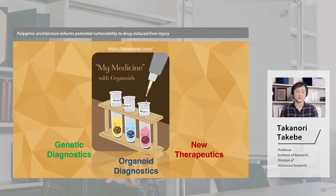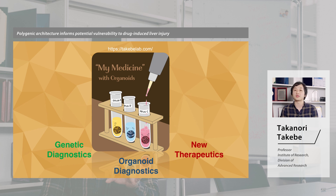Taken together, we are proposing an organoid-based precision medicine application in the near-term future. There are three main applications. First, the genetic risk score can directly predict a patient's condition after drug exposure. Second, we can use patient-specific organoid model systems exposed to the drugs to be treated, and potentially inform which drugs are safer depending on the patient.